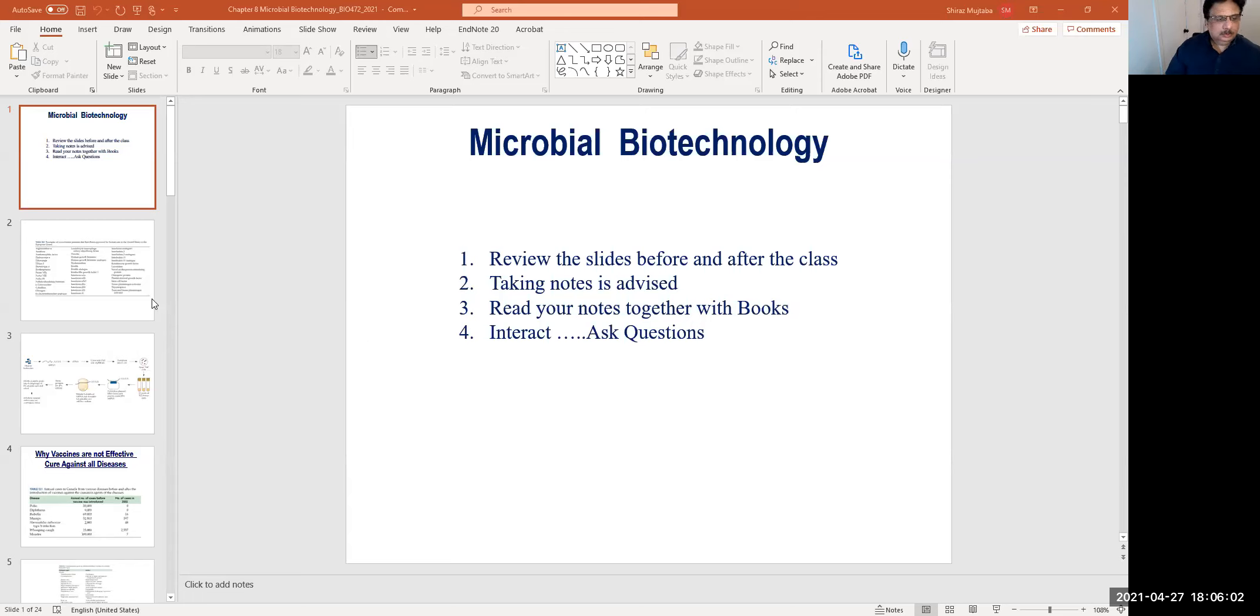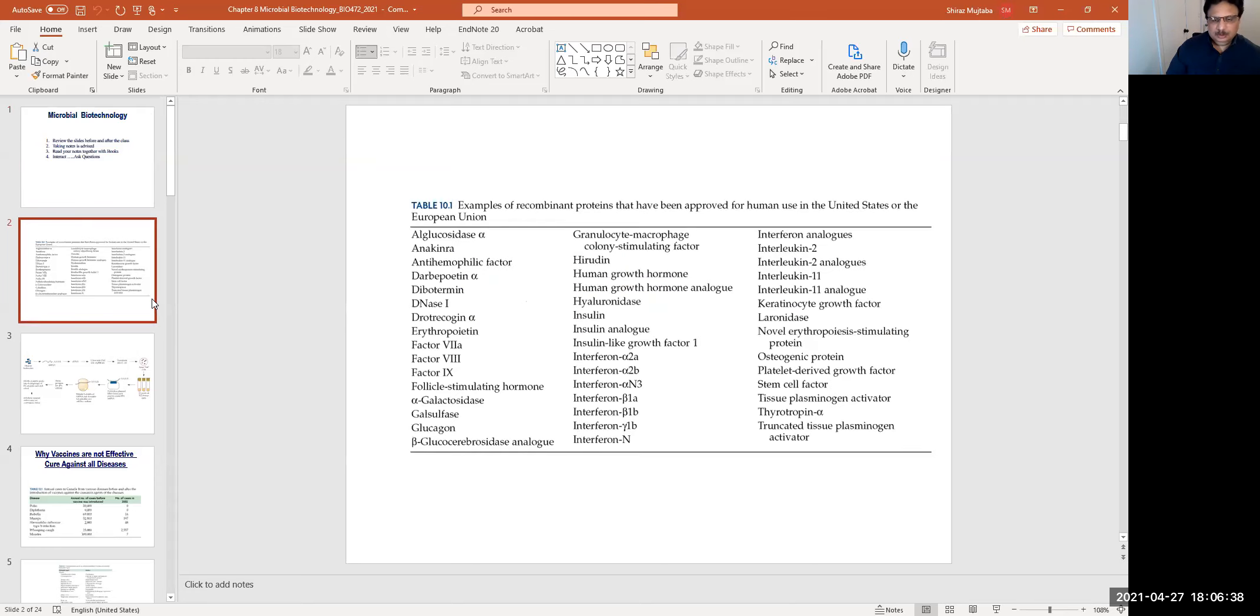So microbes which include bacteria, yeast, and some fungus such as the fungus that produces penicillin. Penicillin is a powerful antibiotic. These microbes serve as a source of various molecules that can impact human health.